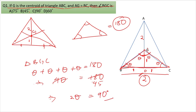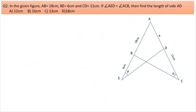The next question: in the given figure, AB = 18, BZ = 6 cm, and CD = 11 cm. If angle AED equals angle ACB (both theta), find the length of side AD, which we label x.